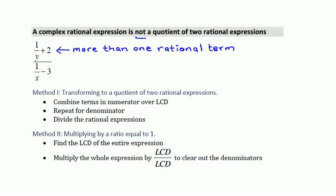We have two different methods to approach something like this. Method one involves changing the form so that it is a quotient of two rational expressions. To do that, we combine the terms in the numerator over the LCD and then repeat the same process for the denominator. Using this method, we have two different LCDs — one from the numerator and another from the denominator. We'll contrast this with method two after working through this process once.